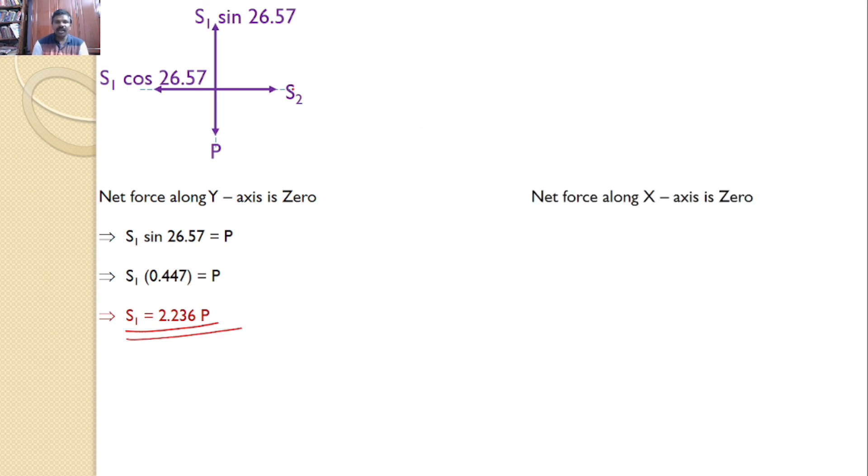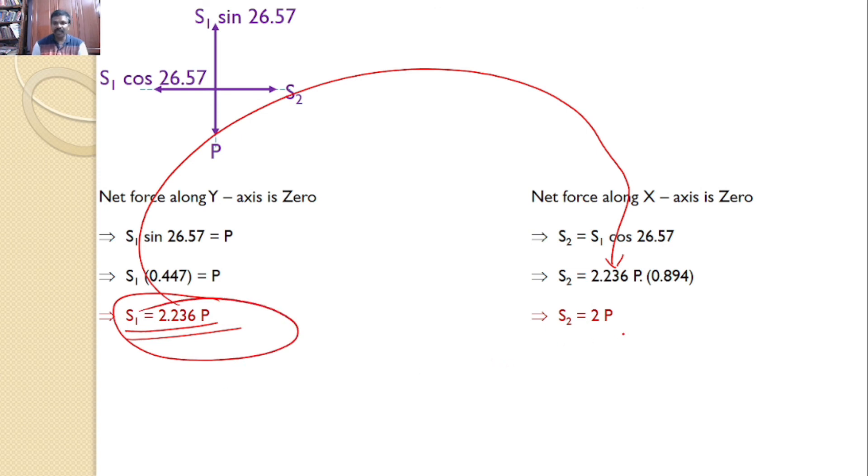Similarly, net force along X axis is zero, that means S2 equals S1 cos 26.57. You can substitute S1 equals 2.236 P here and you will get S2 equals 2 P. Hence the answers are S1 equals 2.236 P and S2 equals 2 P.